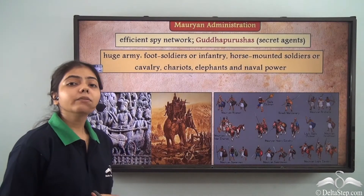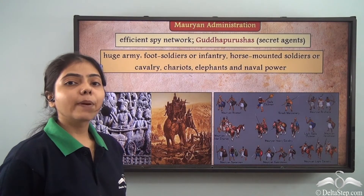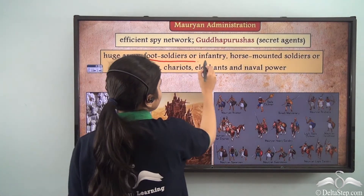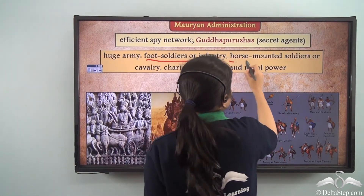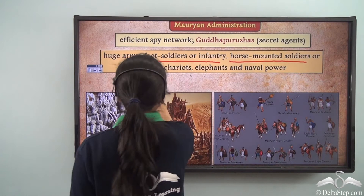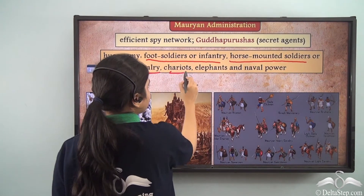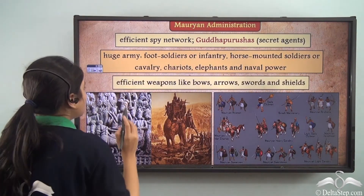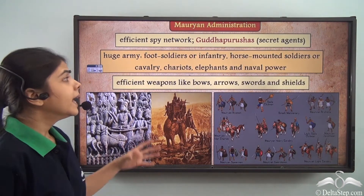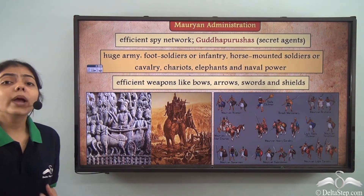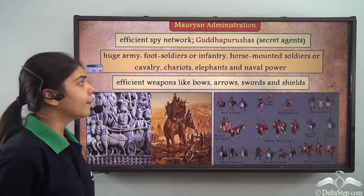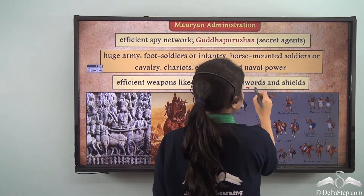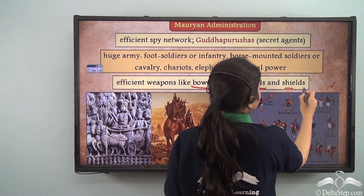The army was divided into specialized divisions including foot soldiers or infantry, horse-mounted soldiers or cavalry, chariots, elephants, and naval power. This army was well equipped with efficient weapons like bows, arrows, swords, and shields.